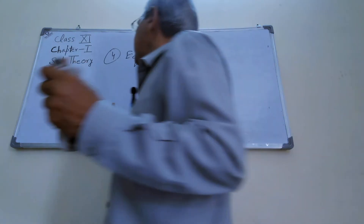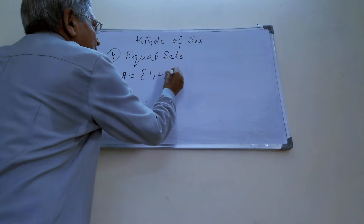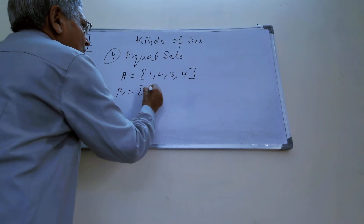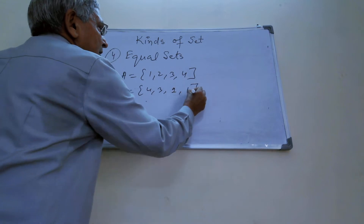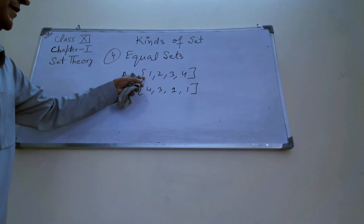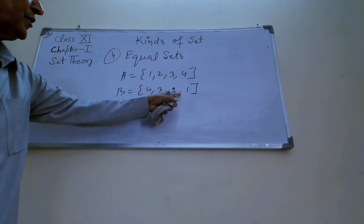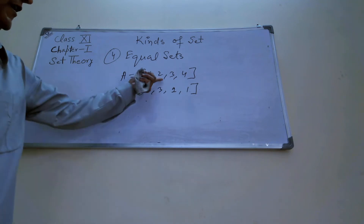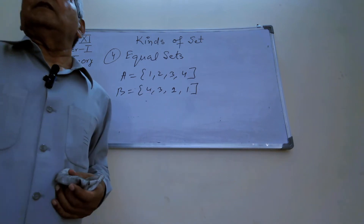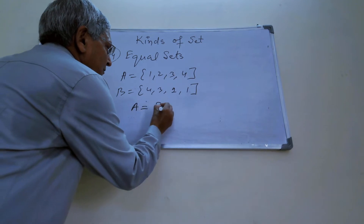For example, A equals {1, 2, 3, 4} and B equals {4, 3, 2, 1}. Here you can see A contains 1, 2, 3, 4 and B also contains 1, 2, 3, 4. All the elements of A and all the elements of B are the same. So these two sets are equal — A is equal to B.